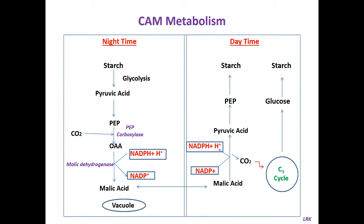What is CAM? Crassulacean Acid Metabolism. Many succulent plants belonging to the family Crassulaceae — such as Bryophyllum and Sedum — show formation of organic acid at nights and its disappearance during daytime. This diurnal fluctuation of organic acid content is found in families like Agavaceae, Orchidaceae, Portulacaceae, Crassulaceae, and Cactaceae. All these plants which show this type of Crassulacean Acid Metabolism are known as CAM plants.